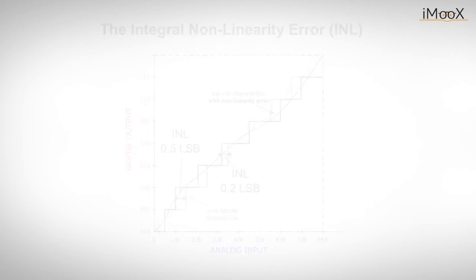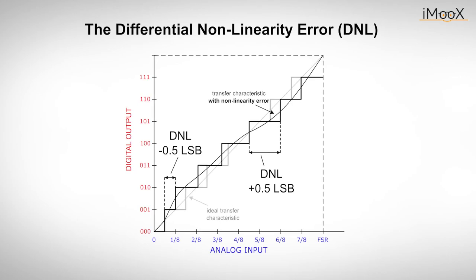In contrast to the INL, the DNL error is defined as the amount of deviation of each individual quantization result from its ideal value. In other words, the DNL is the analog difference between two neighboring codes from their ideal value. If we look at the transfer curve in the picture, we see one ideal quantization step first, followed by a step with only one half LSB, which is too small. The next error is three halves of an LSB, which is too large. The datasheet for this ADC would therefore specify a differential non-linearity of plus minus one half LSB.